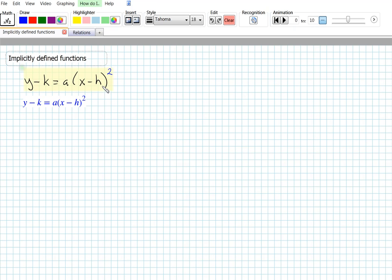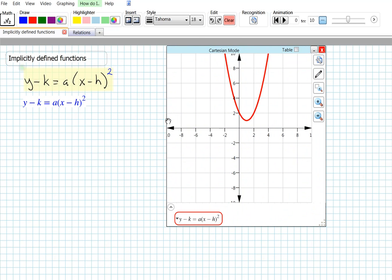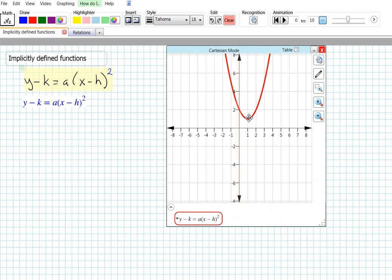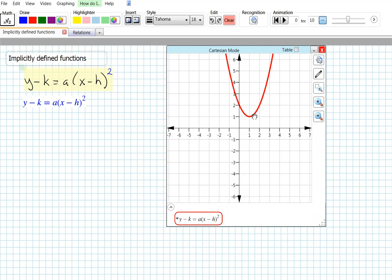One powerful feature of FluidMath is that it can graph implicitly defined functions. Let's take the vertex form of a parabola and create sliders for A, H, and K.